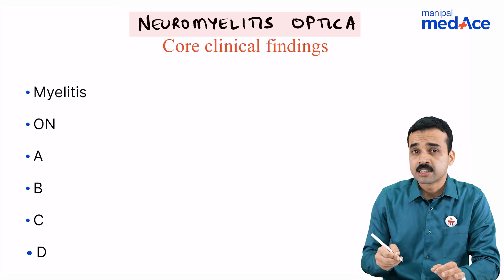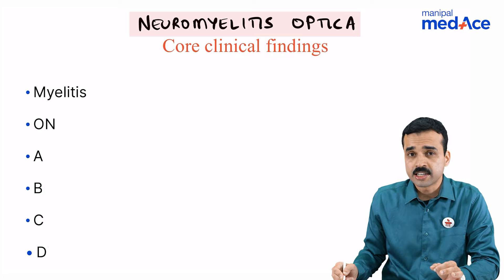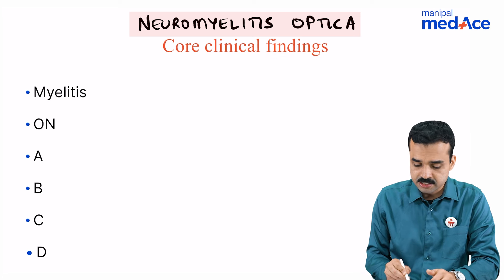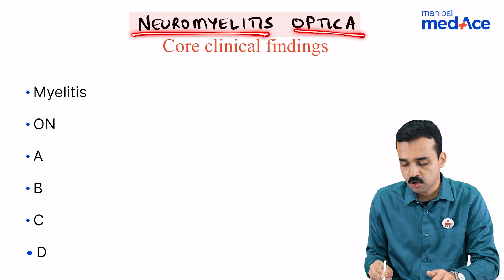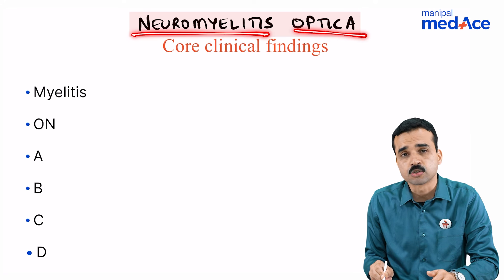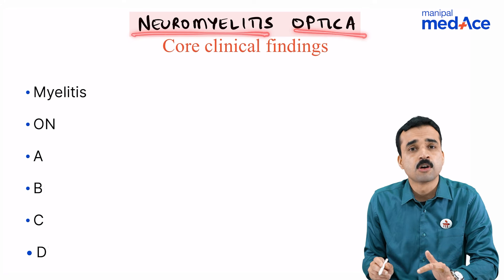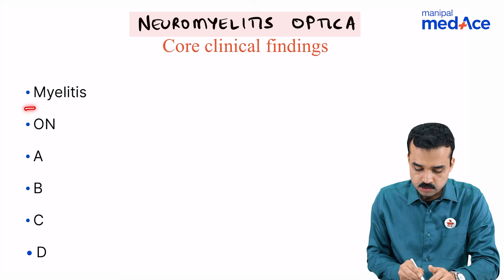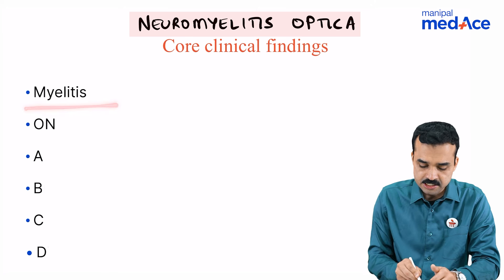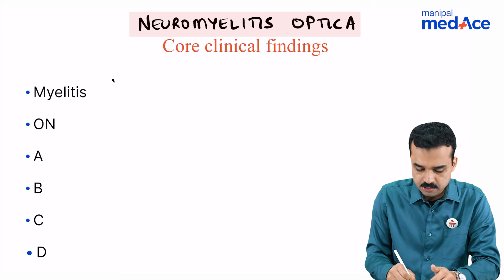Now, what are the clinical core criteria? There are six of them. How you can remember them is neuromyelitis and optica — so there must be some spinal cord and some optic nerve involvement. The myelitis here is longitudinally extensive transverse myelitis, meaning it involves at least three contiguous spinal cord segments.